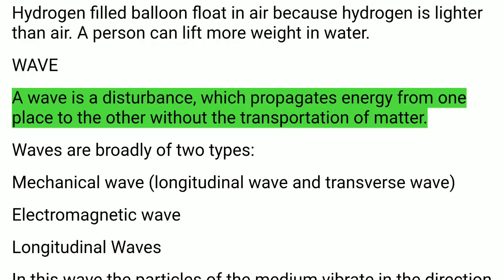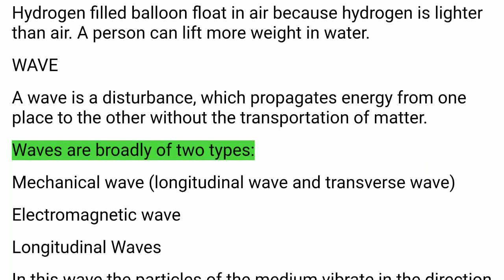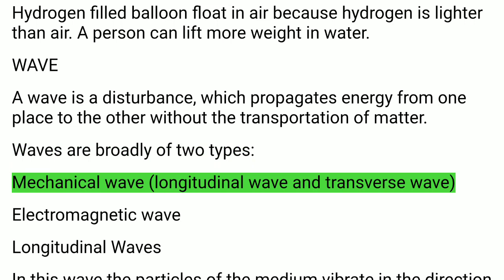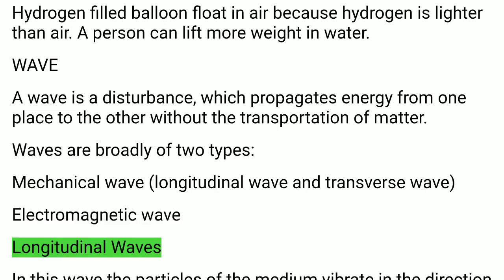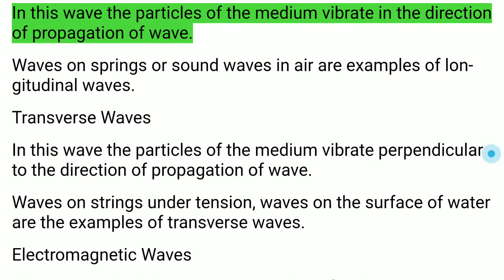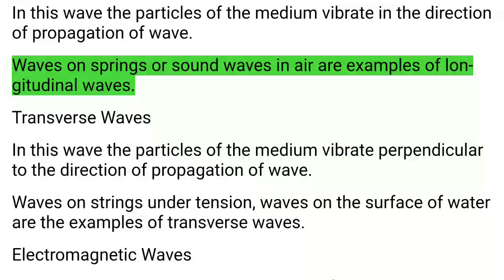Wave: A wave is a disturbance which propagates energy from one place to another without the transportation of matter. Waves are broadly of two types: mechanical waves (longitudinal and transverse) and electromagnetic waves. Longitudinal waves: particles of the medium vibrate in the direction of propagation. Sound waves in air and waves on springs are examples of longitudinal waves.